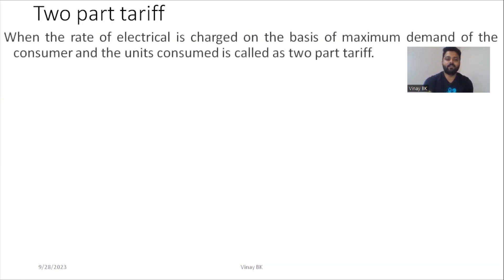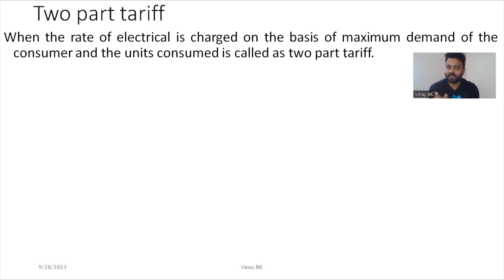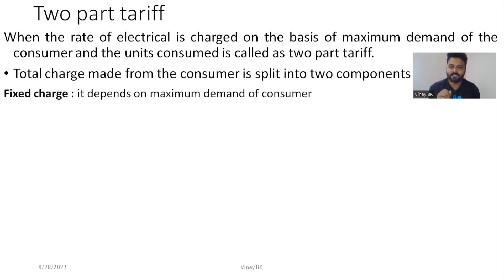Now for two-part tariff: the price of electricity charged on the basis of maximum demand of the consumer and units consumed is called two-part tariff. The total charge from the consumer is split into two components. One is a fixed charge — that is a minimum charge. For example, even if you are not using electricity, you used to pay a minimum amount of around 90 to 100 rupees.